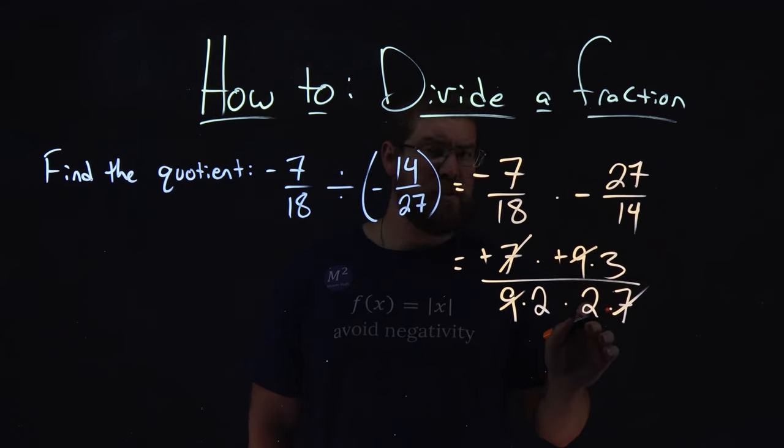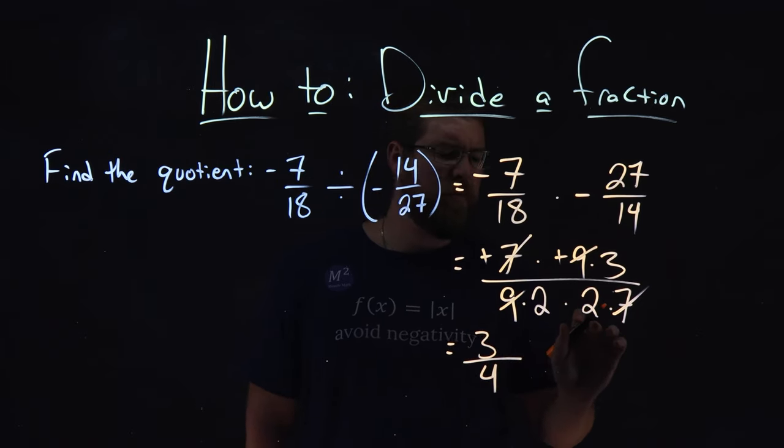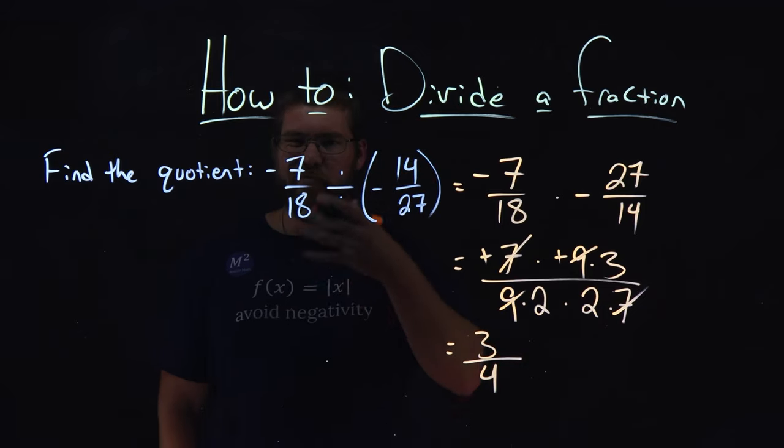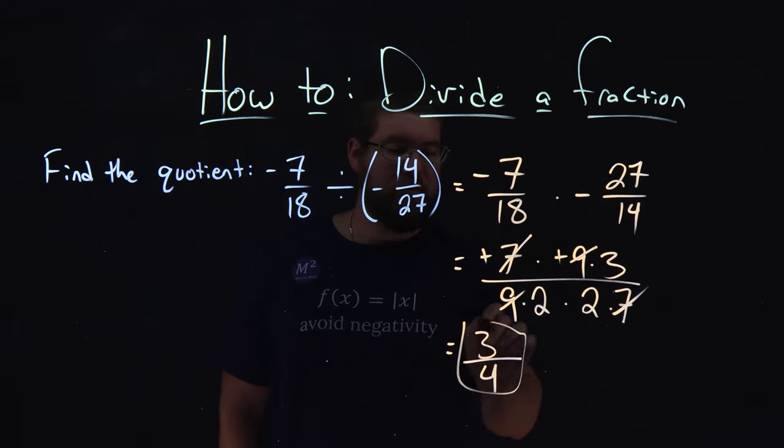And we're left with 3 and 2 and 2. So that's 3 over 2 times 2, which is 4. So this whole fraction being divided simplifies to just be 3 fourths.